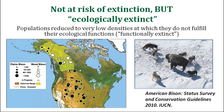Such species may be least concerned on the RedList, but we cannot really consider them to be recovered. Extinction risk does not capture the conservation concern we have for depleted populations, even if they are at low risk of extinction. There are also species considered ecologically or functionally extinct — species with populations reduced to such low densities or sparse distributions that they do not fulfill their ecological functions. American bison is an interesting example: it has been at the brink of extinction, and now is not at risk of extinction.